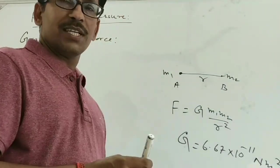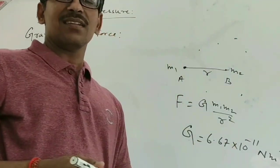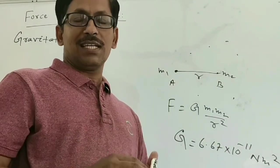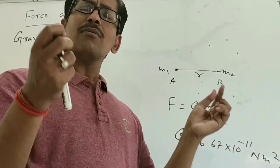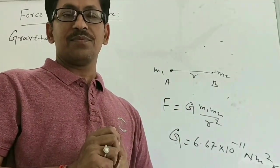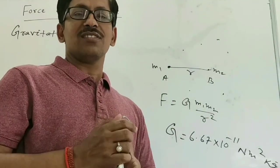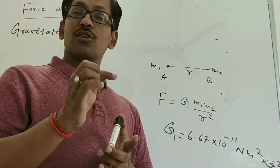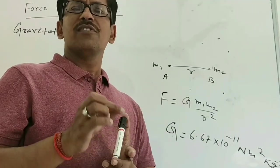Suppose there are a number of masses M1, M2, M3, M4, M5, M6 and so on. To calculate the net force on a given mass, you apply the principle of superposition — you add all the individual forces to get the net force on a given object. Since force is a vector quantity, you cannot simply add them arithmetically; you have to add them using the laws of vector addition.